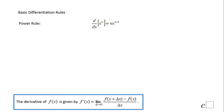The second basic differentiation rule will be the power rule, which says the derivative with respect to x of x to the n is equal to n times x to the power of n minus 1. You see the n moves up front and then we drop one from the exponent.